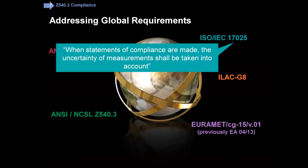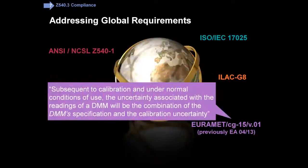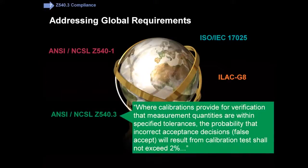Remember 17.025 had that critical statement: when statements of compliance are made, the uncertainty shall be taken into account. One of the key documents for guidance on that was ILAC G8, which we looked at in depth in Module 5. Now on to the topic at hand — Z540.3. The standard itself is only 10 pages, but there's a single paragraph that almost swamps everything else in importance — the one shown in green. We're going to drill in and try to understand that one better.